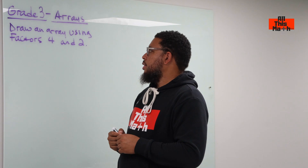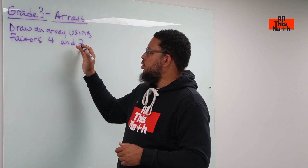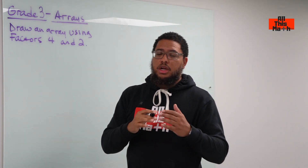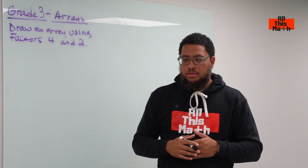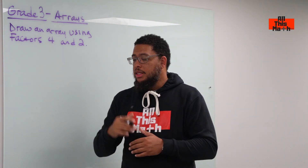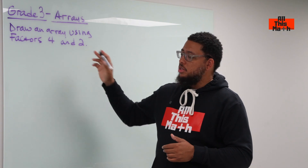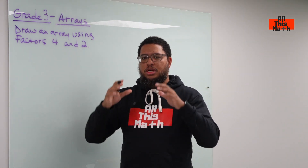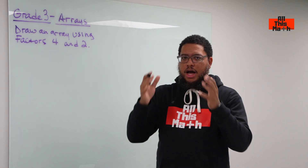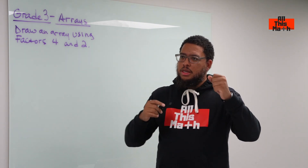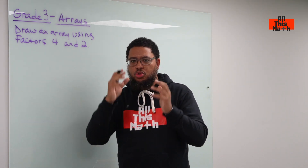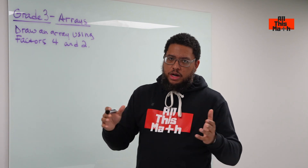So we're going to draw some dots. We have factors four and two. The first number typically refers to the number of rows we have in our array. The second number is the number of columns we have in our array. An array is a rectangular organization of objects — could be dots, could be some type of object, could be a type of toy, could be a type of animal.